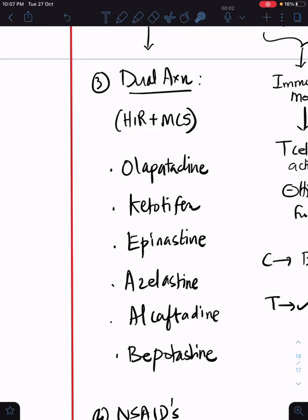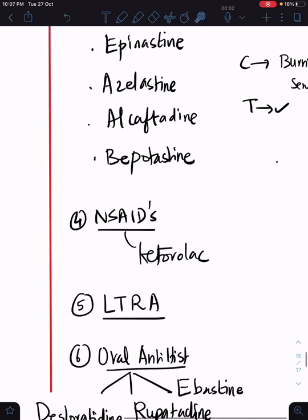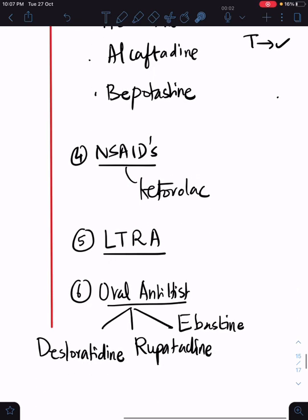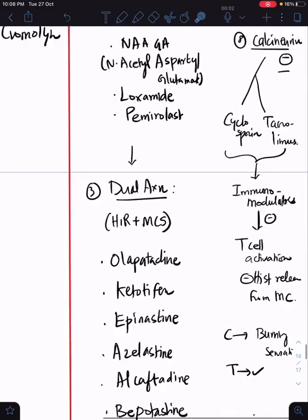Three commonly used anti-allergic medications have dual action of blocking both H1 receptors and stabilizing mast cells. The only NSAID indicated is ketorolac. Then you have leukotriene receptor antagonists still in studies. Oral antihistamines can be tried as adjuvant therapy. Three commonly used oral antihistamines are desloratadine, rupatadine, and ebastine. Ebastine is commonly used in orbit clinic for allergic edema.